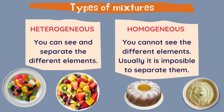We can differentiate two types of mixtures: heterogeneous mixtures and homogeneous mixtures. With heterogeneous mixtures, you can see and separate the different elements. For example, in this fruit salad we can see all the different fruits and we can separate them, or in these jellies we can see that there are sweets of different colors.